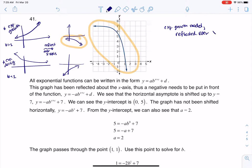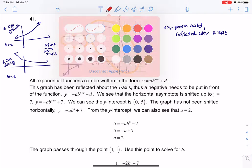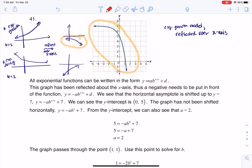And we learned back in chapter three that when you reflect over the x-axis, you're going to wind up putting a negative. You're going to put a negative out in front of that exponential term. So with that, let's see if we can start to pick apart some of our things.